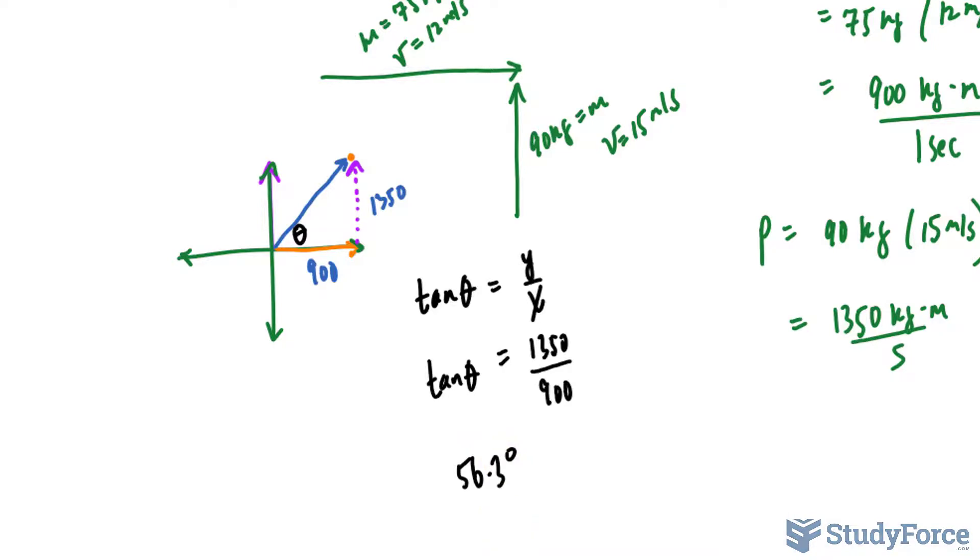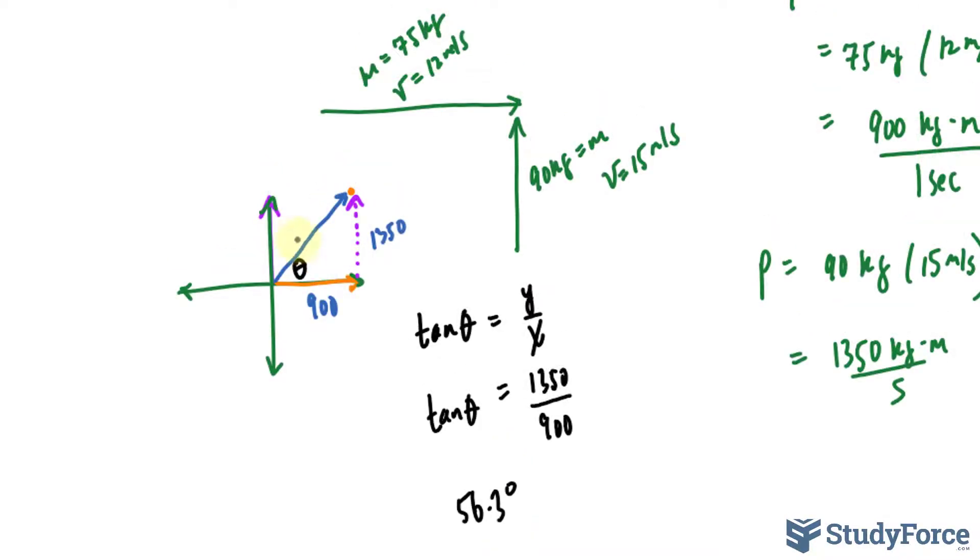So that's the direction that they're moving. To find out the velocity, we can find the magnitude of this which will represent the momentum of them stuck together and from there we can find the velocity.